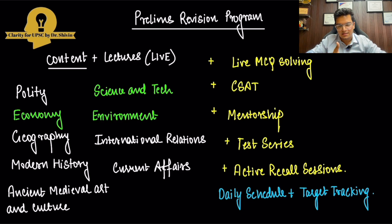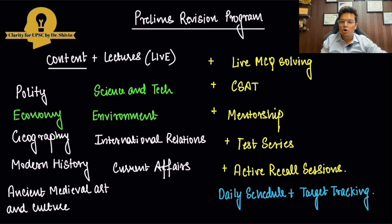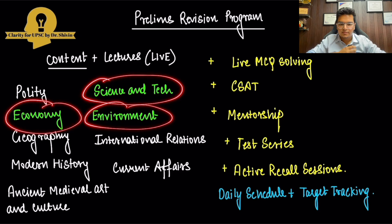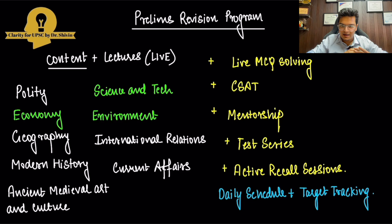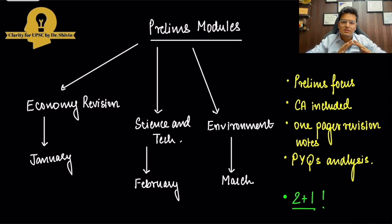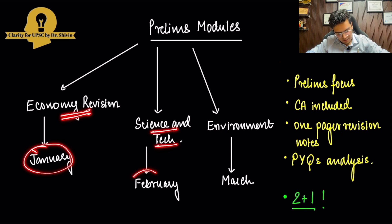Similarly, just like in MMP Plus, here also if you want just one subject or just want to do a test series, you can do that, or you can do all of it in one place. In this program I am covering science and technology, environment, and economy — these three modules I will do in depth, completely by myself, with a focus on active recall sessions. Now, the three prelims modules I am doing: first will be the economy revision module in January, then the science and tech module in February, and the environment module in March.